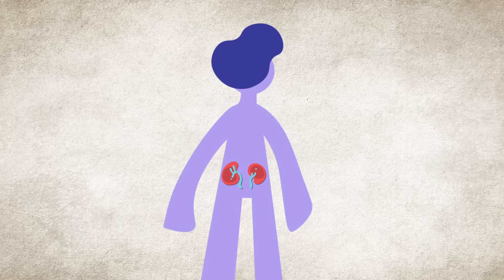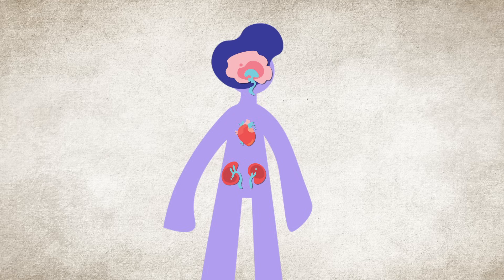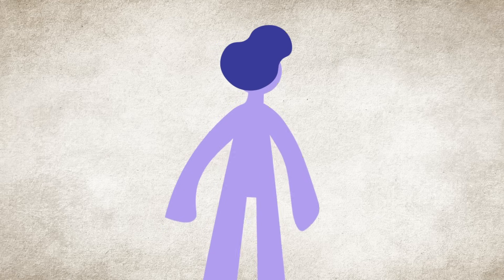Most people have two kidneys, about the size of their fist, located in their lower back. Just like your brain or heart, kidneys keep you alive.